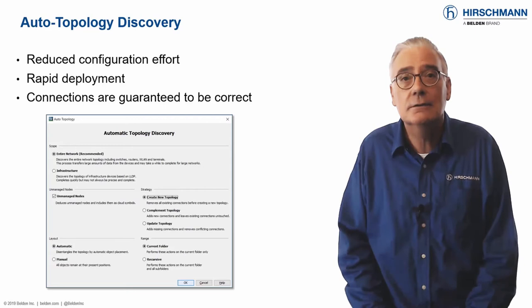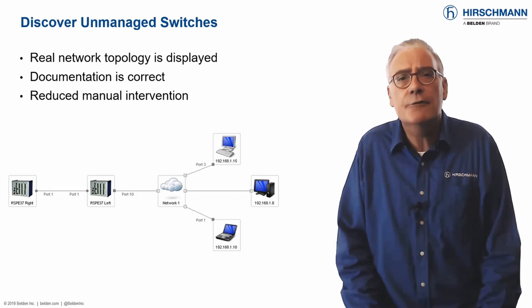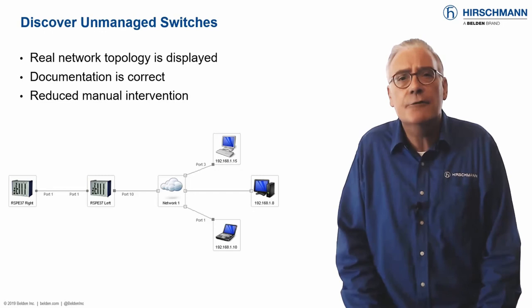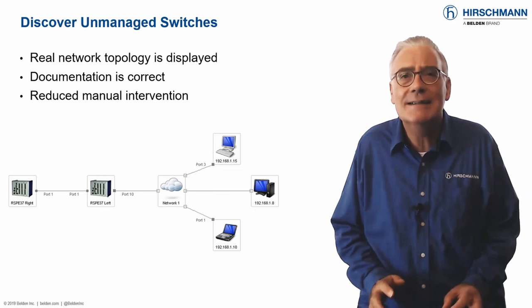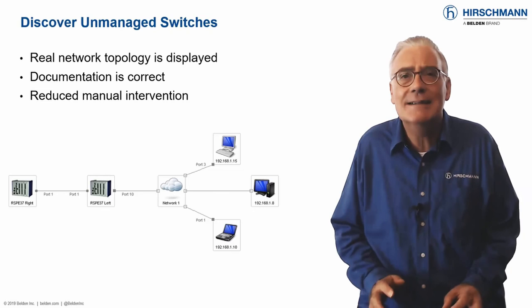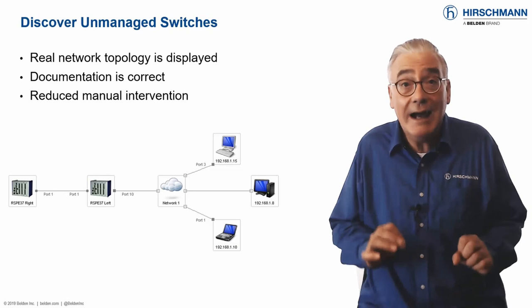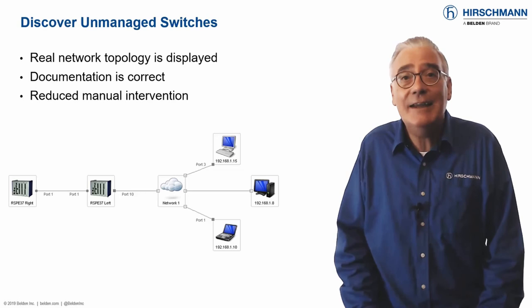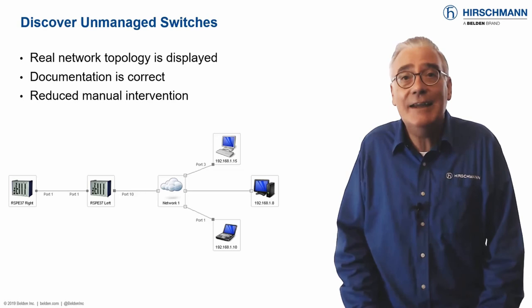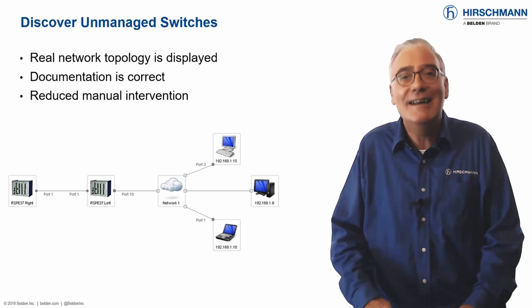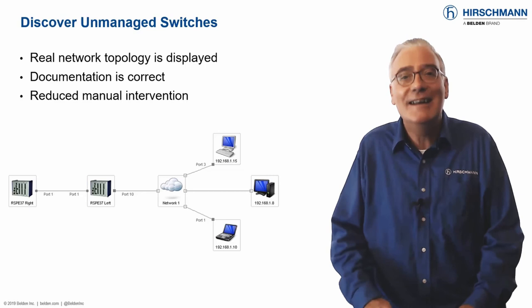To reliably supervise a network, the infrastructure must be built using managed switches. These devices provide information about topology and status, which forms the basis of the graphical display. Managed switches are slightly more expensive than unmanaged ones. For this reason, some users deploy unmanaged switches at the edges of a network where the operation is not critical. Even so, it is still important to have an accurate overview of your complete network topology. You could manually draw the unmanaged switches in your network map, or you can allow Industrial HiVision to deduce the location of unmanaged switches and display them as part of the topology map.